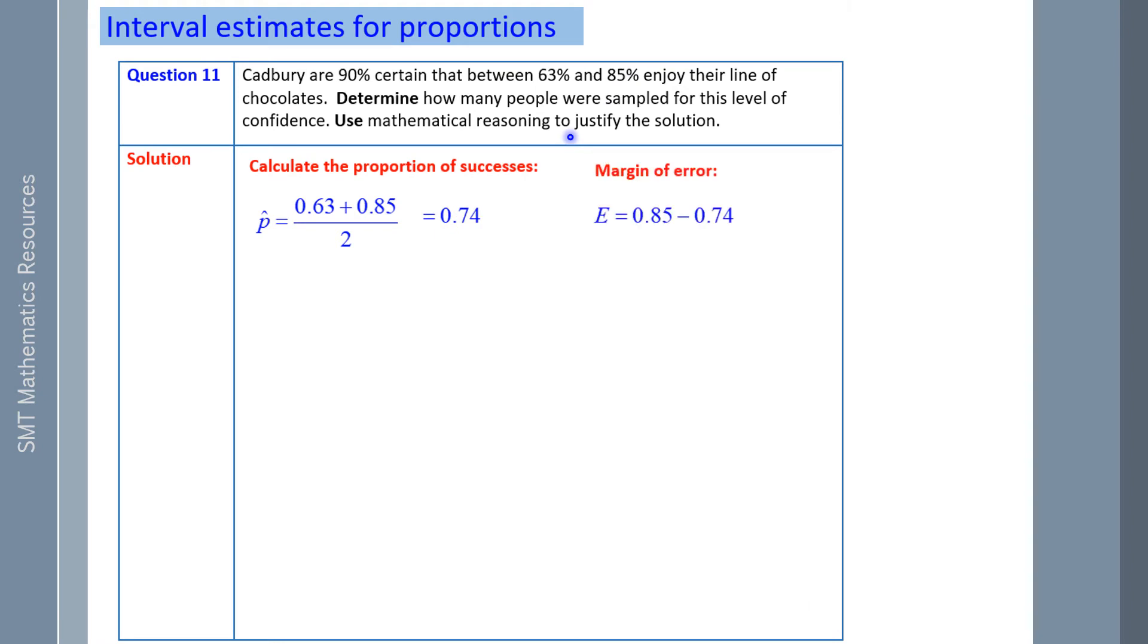Next you can work out a margin of error, because our higher value, which is 85%, take the sample proportion of successes, P hat, which is 74%, and margin of error is 11%. Now apply the rule for a confidence interval for 90%. Now here, I'm not doing plus or minus. I'm just going to work on the upper end. That is, I'm really just using the margin of error formula to work out N.